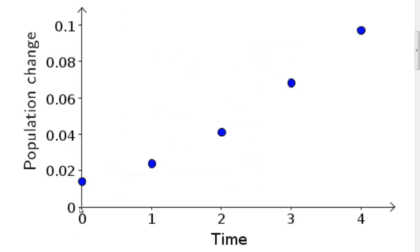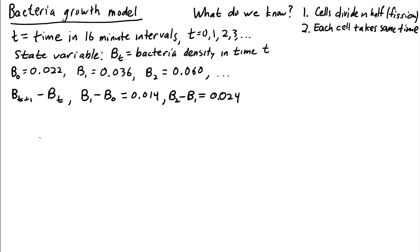Here's a plot that shows the change in the size of the bacteria population in each time step plotted as a function of the time step. We can see that the change is increasing with time. And in fact, it seems as though the change is increasing faster than linearly. See how these points start to curve upward?